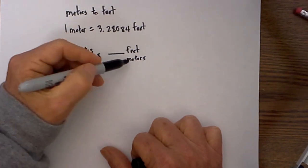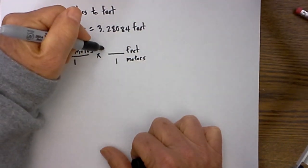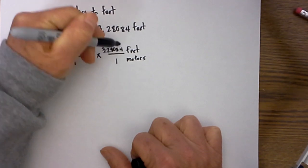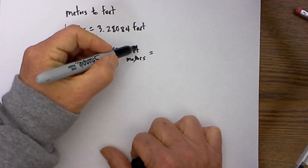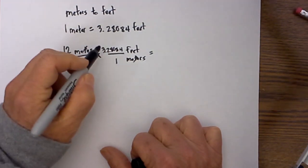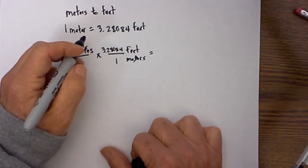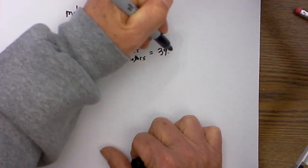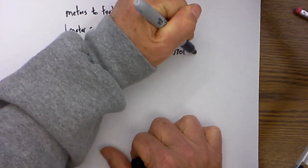I then ask myself which is larger, meters or feet. Well, 1 meter we know is equal to 3.28084 feet. Meters cancel, I am left with feet. 12 times 3.28084 is equal to 39.3701 feet.